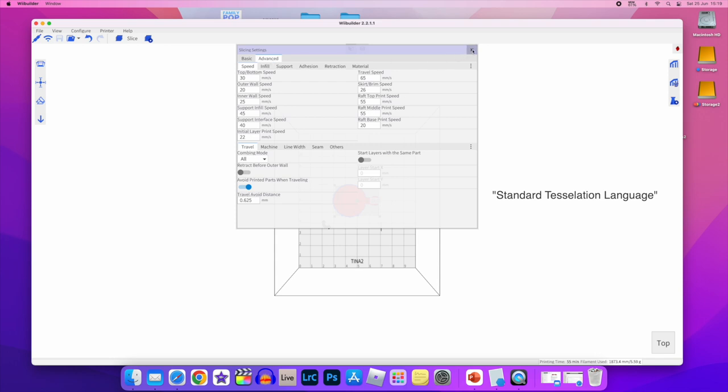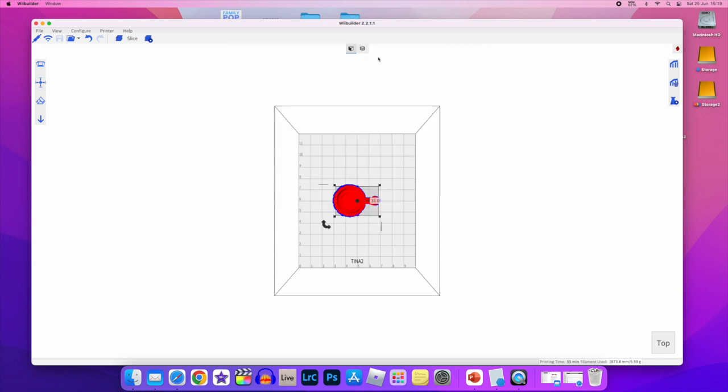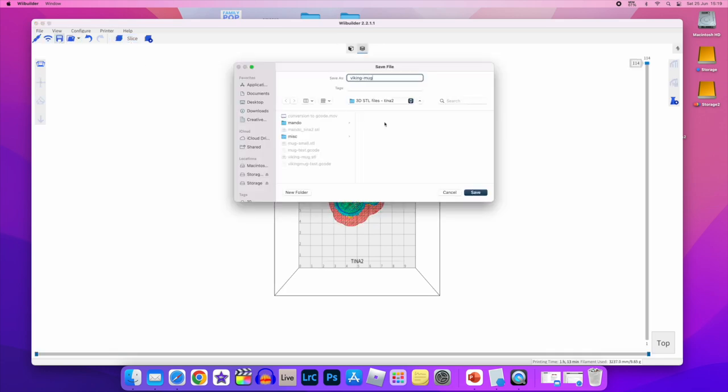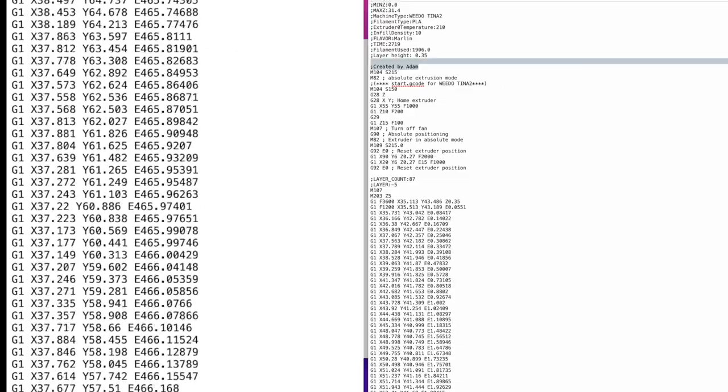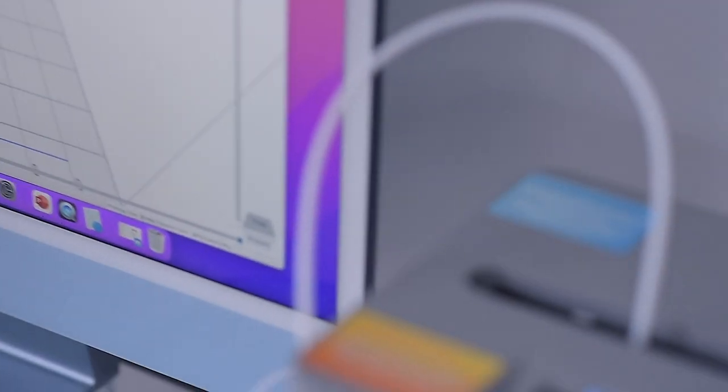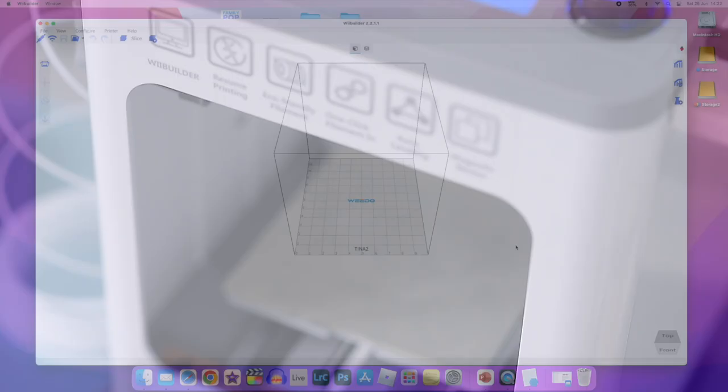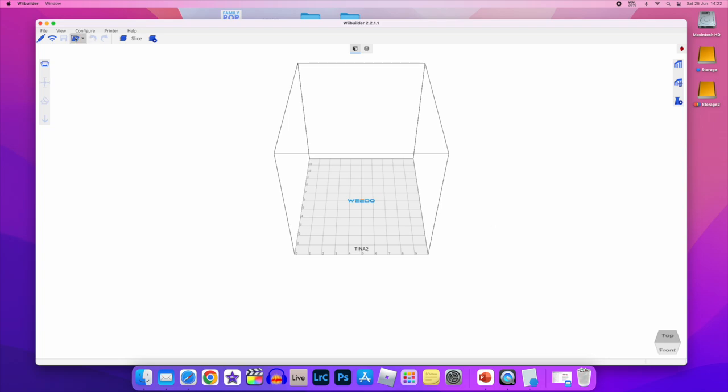Before the 3D model can be loaded into TINA2 printer, it has to be sliced and converted into G-code, which is nothing more than a programming language used to control CNC machines and 3D printers. To convert your 3D model into G-code, I recommend using the WEBuilder app, which is included on the SD card that comes with the printer and can be installed on PC or Mac.